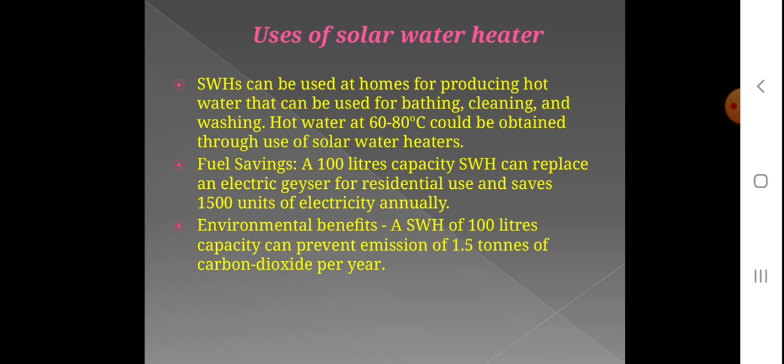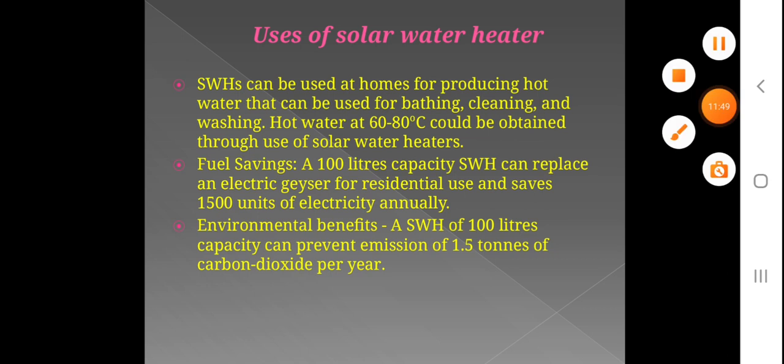Thermal power plants emit dangerous gases in their smoke, which may result in global warming, pollution, and health diseases. Carbon dioxide is the main contributor to global warming. A 100-liter capacity SWH can prevent 1.5 tons of greenhouse gases including carbon dioxide per year. So we should use solar water heating systems to save energy and protect the environment.